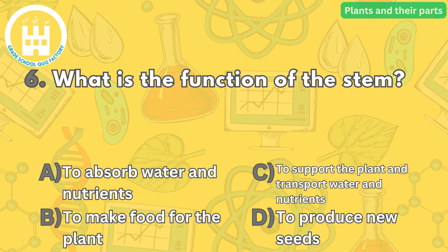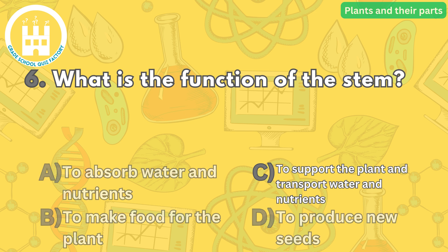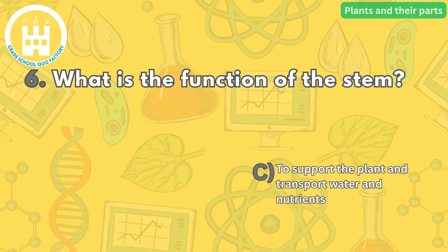Question number six: what is the function of the stem? The correct answer is letter C — to support the plant and transport water and nutrients. The stem provides support to the plant and acts as a pathway for the transportation of water and nutrients between the roots and the other parts of the plant.